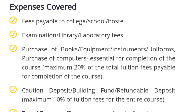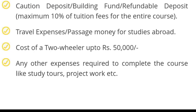The expenses covered in your education loan include: first, your college, mess, and hostel fees; second, library, lab, and all examination fees; third, expenses for books, uniform, laptops, and other items essential for your course; fourth, caution or security deposit; fifth, travel expenses; sixth, purchase of a two-wheeler vehicle like a bike or scooty up to 50,000 rupees; and finally, all expenses for project work, study tools, and other expenses required for course completion.